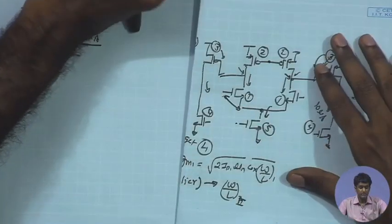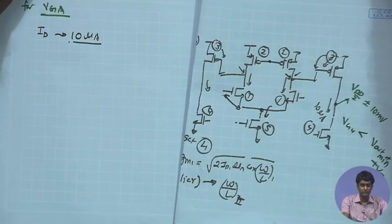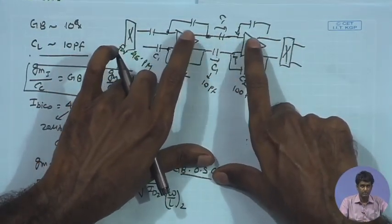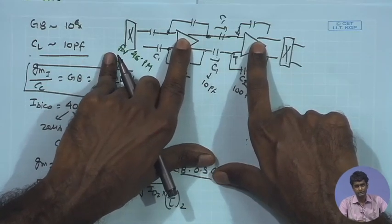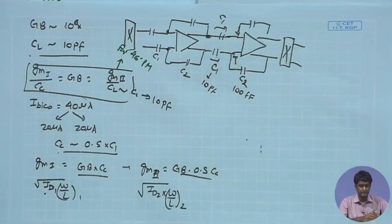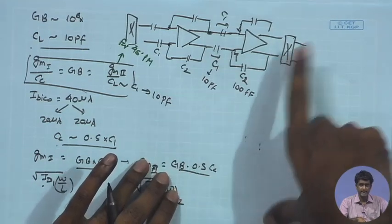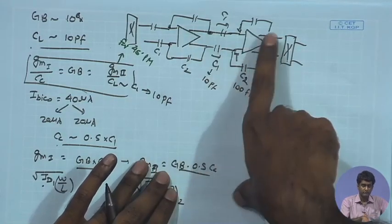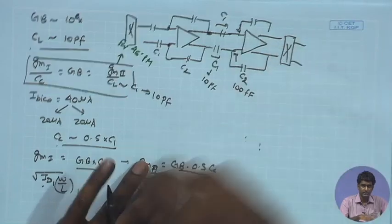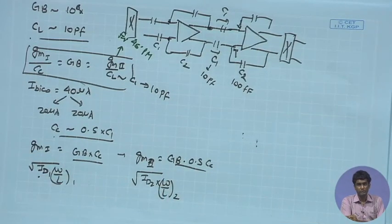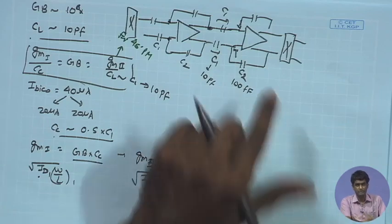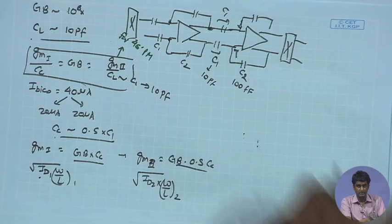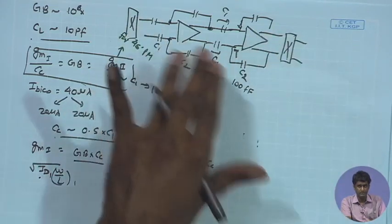The gain remains similar: the total gain of 10^4 is split into 10^2 for each stage. Bandwidth is also similar, so the gain-bandwidth product for the VGA stage is similar to the front-end. For the load capacitance CL of the VGA, we need to know the next stage — typically an anti-aliasing low-pass filter, or other blocks. Those components provide a capacitive load, and for simplicity we can assume a similar value of load capacitance.